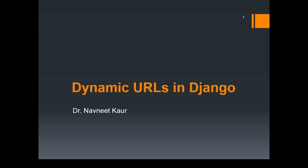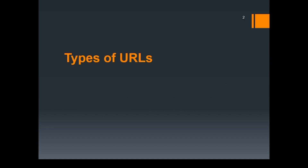Welcome to this lecture. Here we are going to discuss about dynamic URLs in Django. In the previous lecture, we already have started working with views and URLs. Now let's have a look at the different types of URLs. There are two types of URLs — one is static and the other one is dynamic.